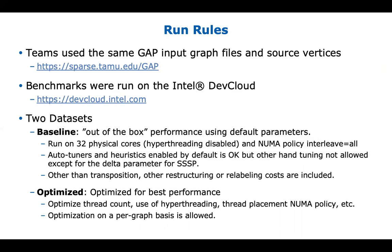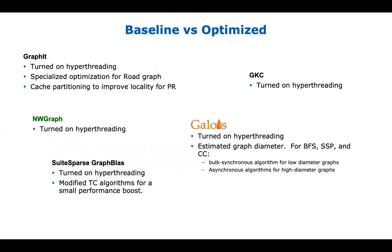The second dataset was the optimized run, where teams could do whatever they wanted — change thread count, play with NUMA policy, even modify the algorithm — to show off their system at its best. The results surprised me. NW Graph and GKC just turned on hyper-threading and did nothing else, which is a real strength: their systems are not sensitive to end-user knobs.